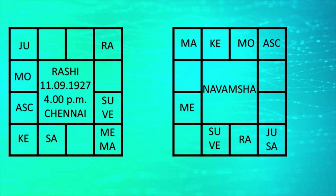If you check his natal Rashi chart, the ascendant lord is in connection with Jupiter. Though the fifth house lord Venus is in the eighth house to the ascendant, it has the aspect of the full moon and the eighth house is also Subhatwa. The ninth house lord Mercury is exalted and it is in conjunction with eleventh house lord Mars. Both the ninth and eleventh house lords are under the aspect of Jupiter.